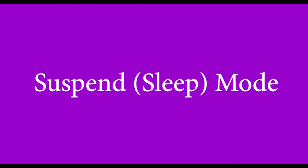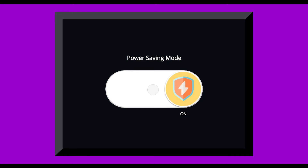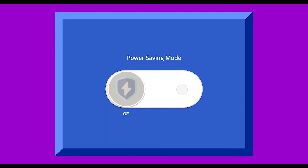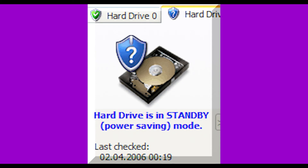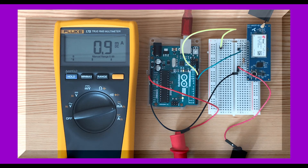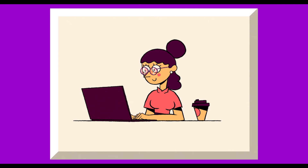Now come to the third system setting: suspend or sleep mode. Suspend is a power-saving state wherein a computer does not turn off completely. In this process, the monitor and hard disk are turned off, but the computer puts its work and settings in RAM and draws a small amount of power. It allows a computer to quickly resume full power operation when you start working again.